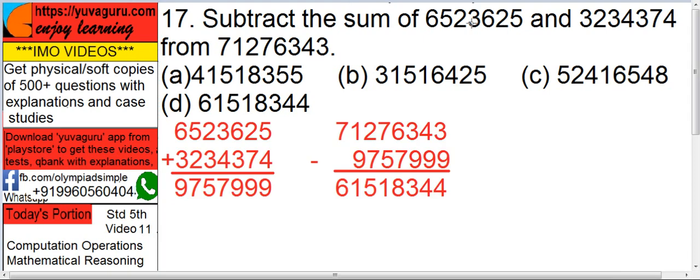The tougher way to do this is just add these two numbers, 6523625 and 3234374, get the answer, then subtract this answer from 71276343 and you get the answer. But in exams we have to save time, so don't do this method.